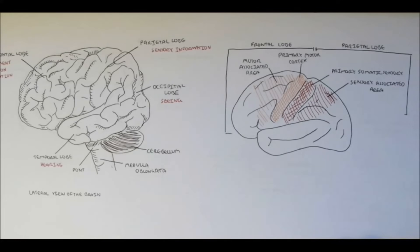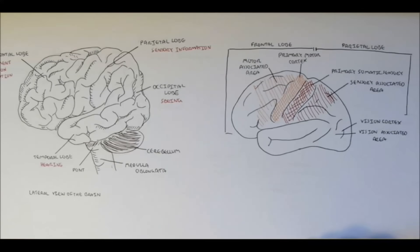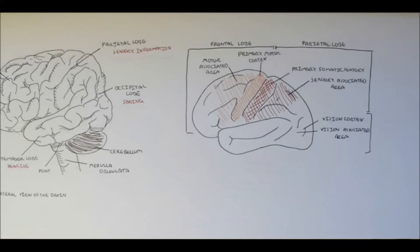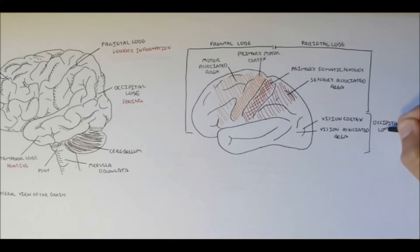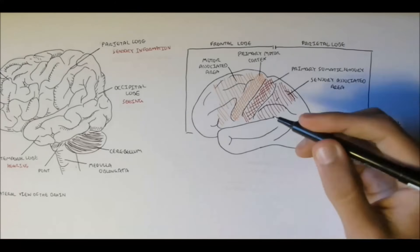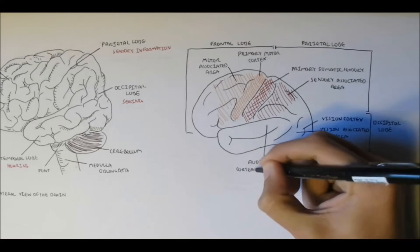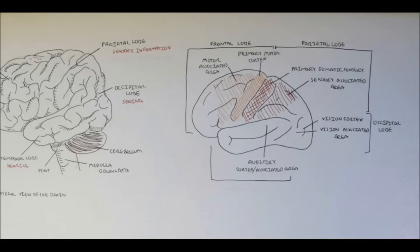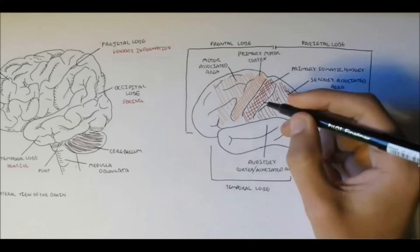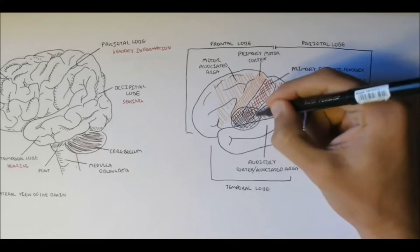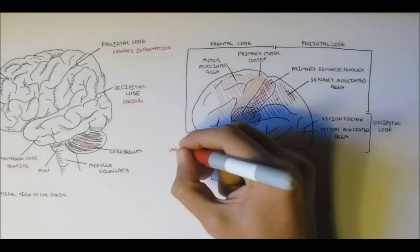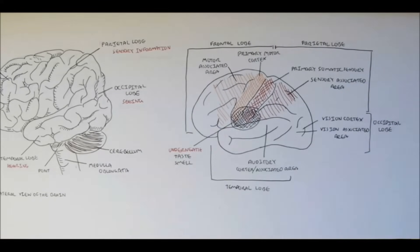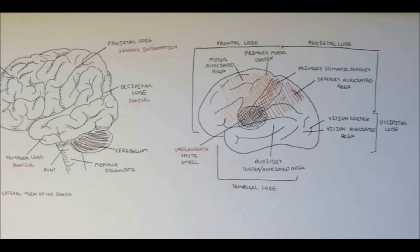What separates the primary motor cortex and the primary somatosensory cortex is the central gyrus. At the very back we have the vision cortex and the vision associated area. The last lobe is the temporal lobe, which consists of the auditory cortex and the auditory associated area for processing our hearing. Underneath this section we have areas associated with taste and smell, which is just interesting to note.